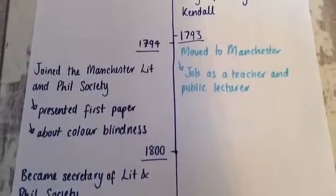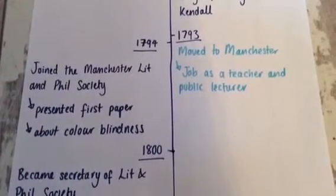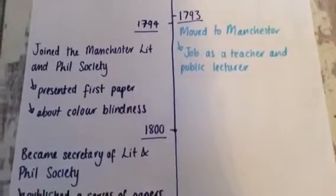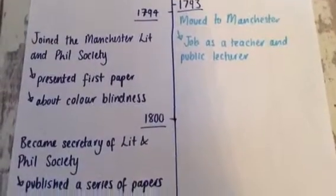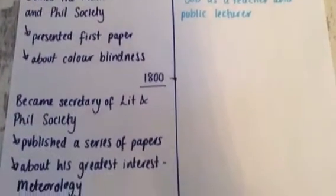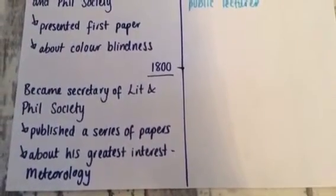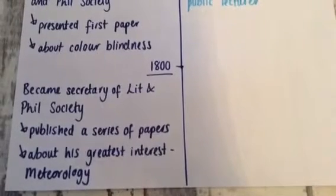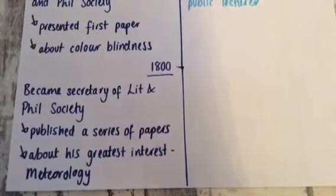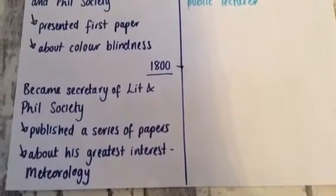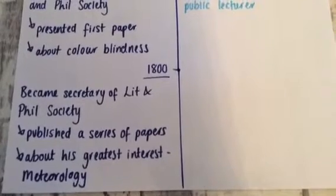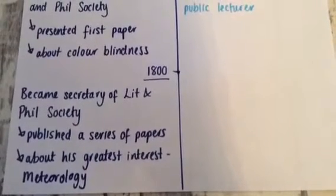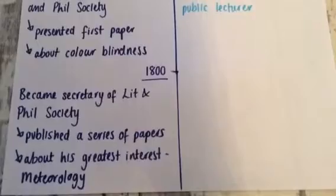A year later he joined the Manchester Literary and Philosophical Society and presented his first paper about colour blindness. In 1800, he became the Secretary of the Society and published a series of papers about his greatest interest, meteorology, of which he kept a daily diary for 57 years, including 200,000 observations.